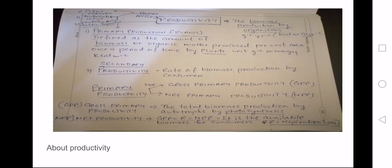Now the productivity has been divided into two main parts. One is the primary productivity, another is the secondary productivity. When I talk about the primary productivity, I am talking about the biomass or the organic product or matter produced per unit area over a period of time by plants.